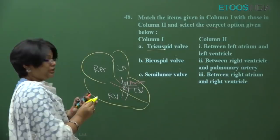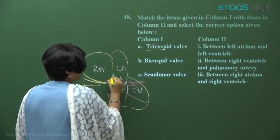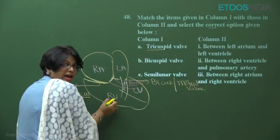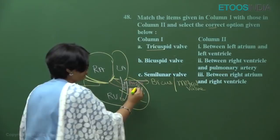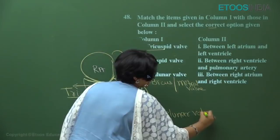The valve between right atrium and right ventricle is made of three cusps — the tricuspid valve. The valve between left atrium and left ventricle has two cusps — called the bicuspid or mitral valve. The valves between right ventricle and pulmonary artery, and between left ventricle and aorta, are also three-cusped but are semi-lunar in shape — called the pulmonary and aortic semi-lunar valves.